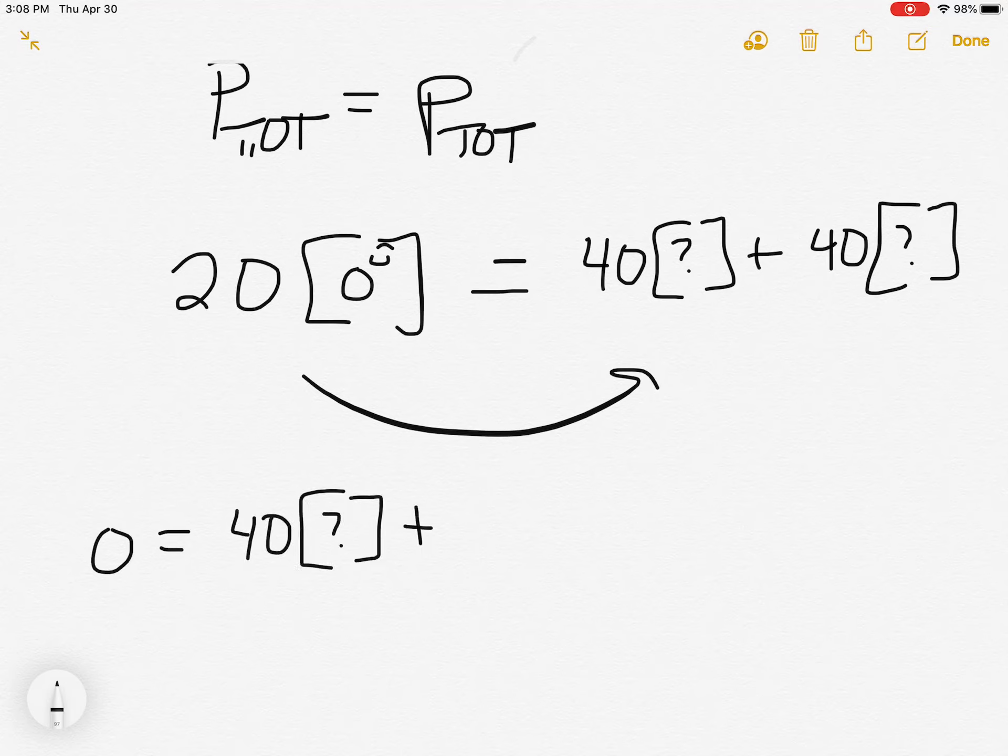So what we're going to do is take this and move this 20 to the other side, leaving us with zero on this side. 40 some unknown direction, plus 40 some other unknown direction.